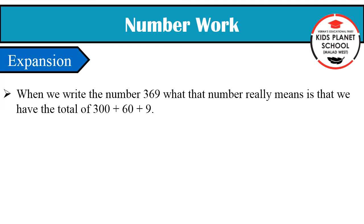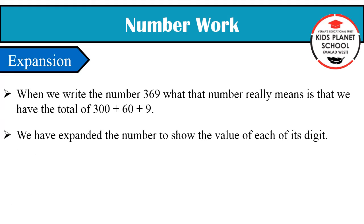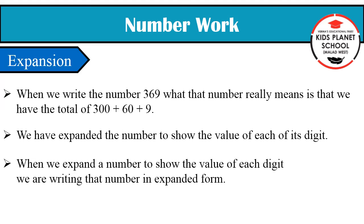When we write the number 369, what that number really means is that we have the total of 300 plus 60 plus 9. We have expanded the number to show the value of each of its digits. When we expand our number to show the value of each digit, we are writing that number in expanded form. This expanded form is called expansion.